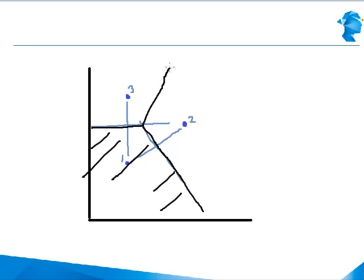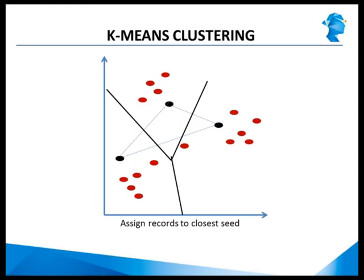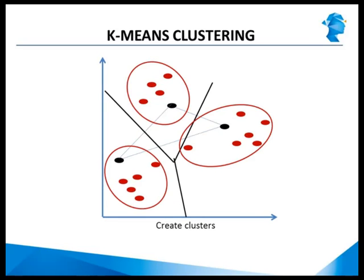Similarly, we create areas for seed 3 and seed 2. This is how the algorithm assigns each observation to one of the three seeds — depending on which seed's area the observation falls in. We've now assigned all records into three different groups, forming the first set of clusters based on the three randomly chosen seeds.